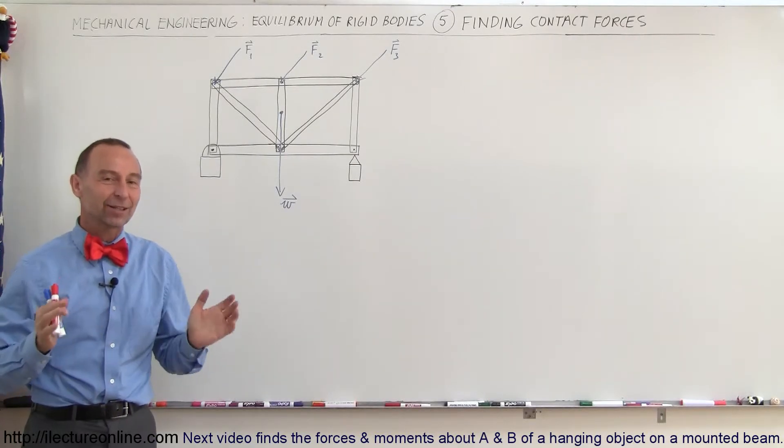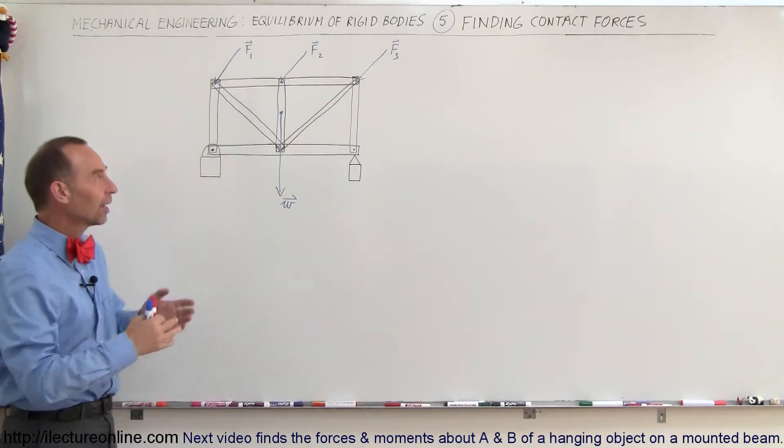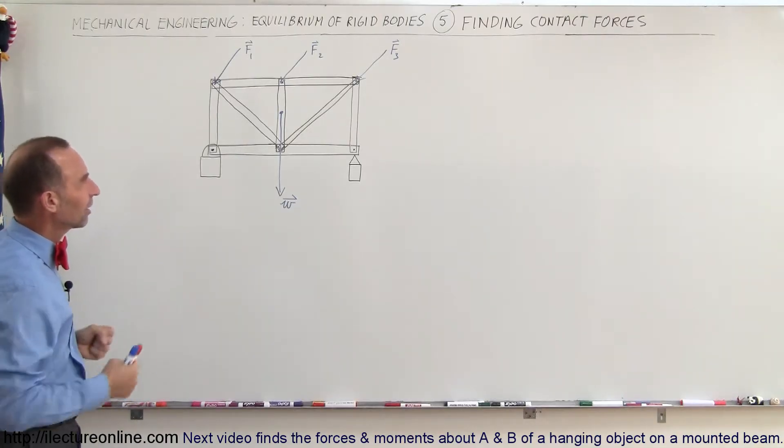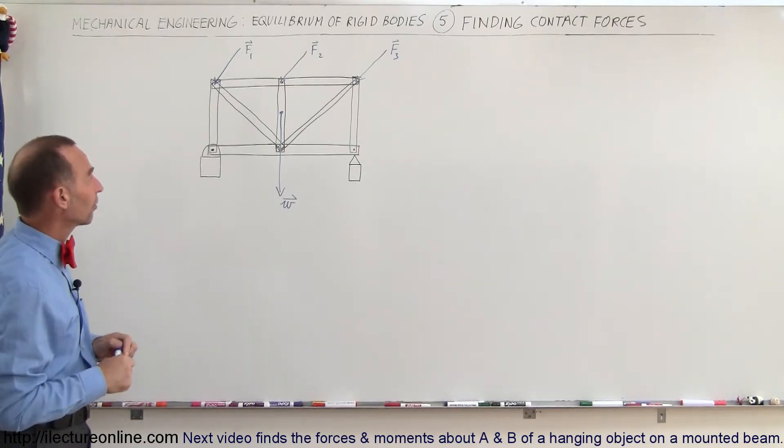Welcome to Electron Line. Now let's take a look at a small example here of how to find the contact forces on a particular structure. So let's say this is kind of like a support structure. Could be a bridge, could be a handle of a walkway or something like that.